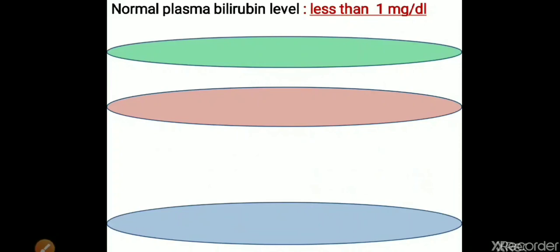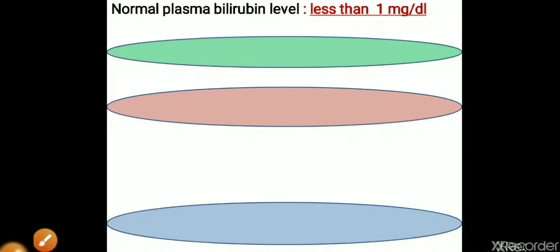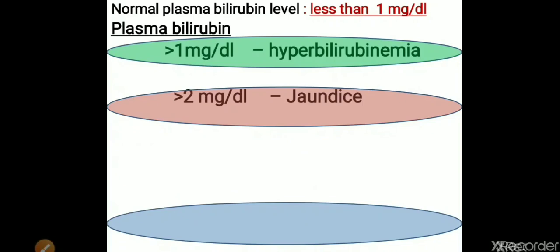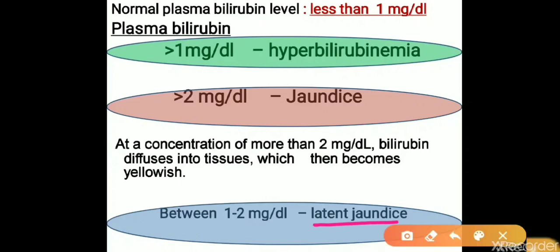In a normal healthy individual, the plasma bilirubin level should be less than 1 mg per deciliter. Among this, 70% is contributed by unconjugated bilirubin and the remaining 30% by conjugated bilirubin. If plasma bilirubin level is more than 1 mg per deciliter, that condition is known as hyperbilirubinemia. For jaundice, the level must be more than 2 mg per deciliter. If it is between 1 to 2 mg per deciliter, it is known as latent jaundice.